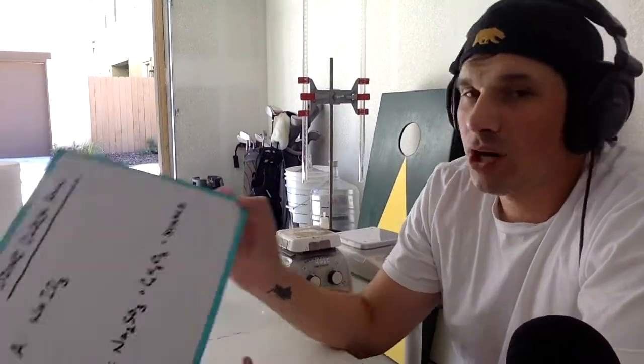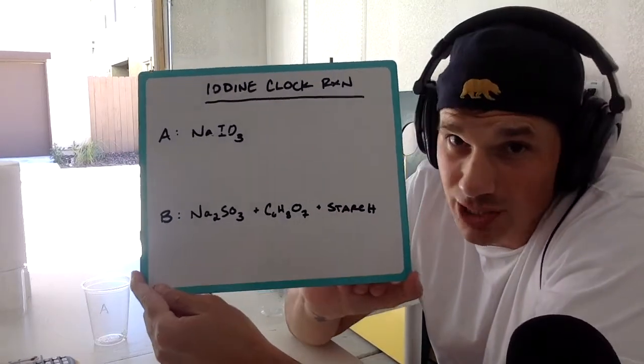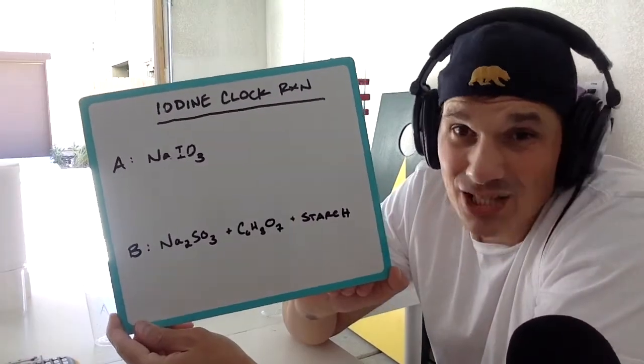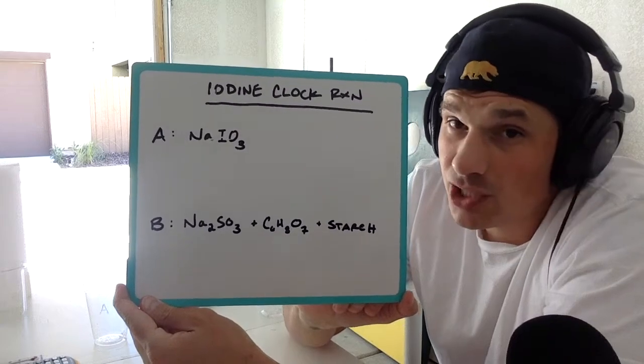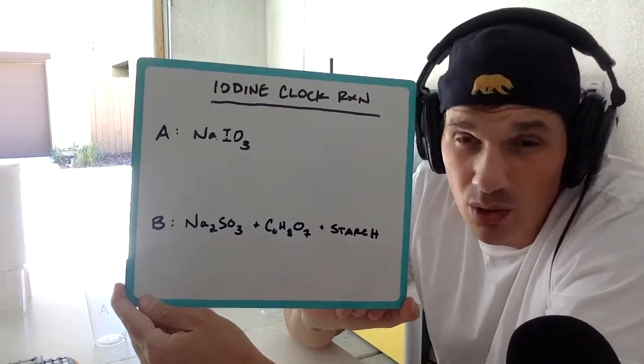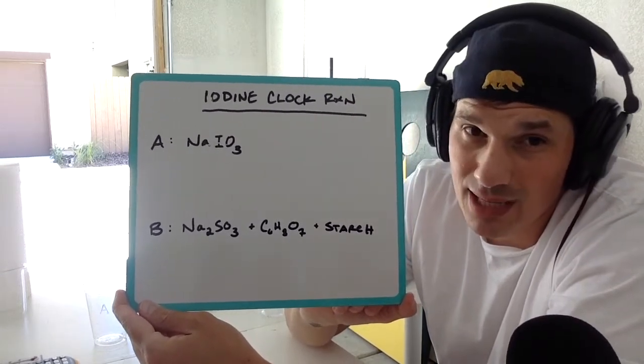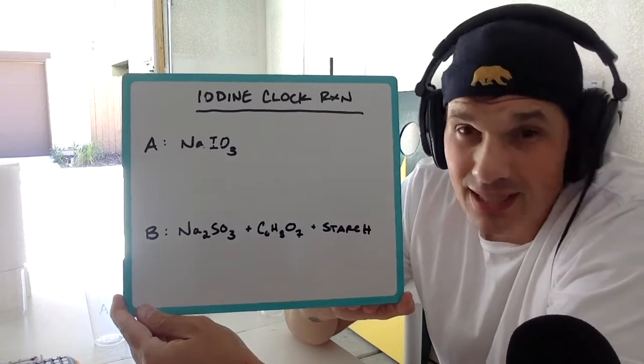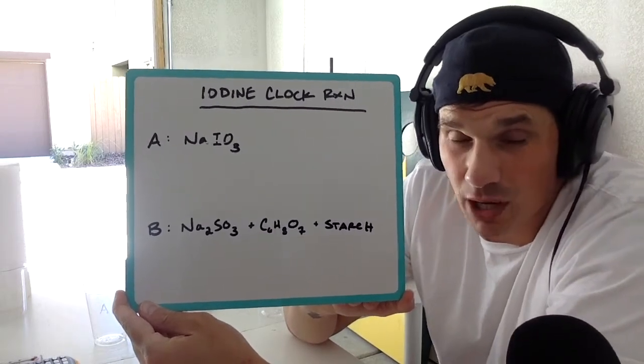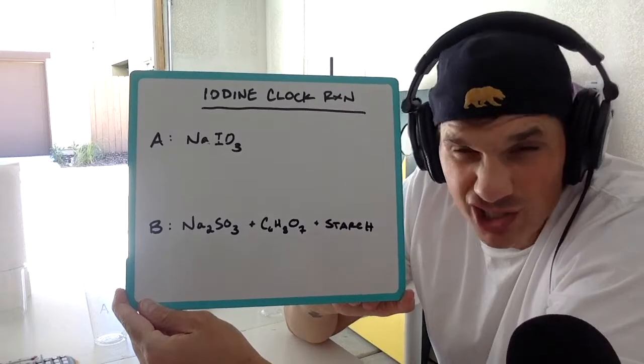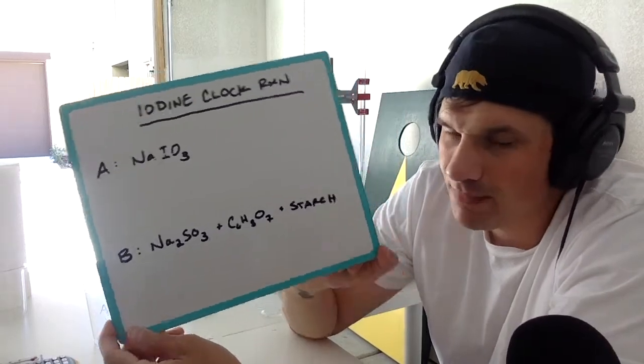Now, what's actually going on here? Like I said, I had two solutions. Solution A just had sodium iodate in it. Solution B, that opaque one, was a combination of three things: sodium sulfite, citric acid - that's that chemical compound in the middle - and starch. Starch is what makes it a little opaque.